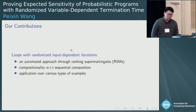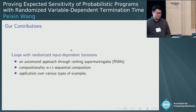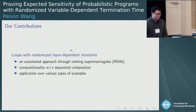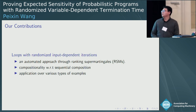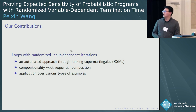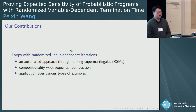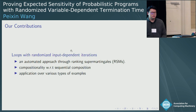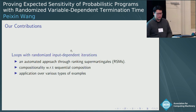In our work, we present an automated approach through working supermartingale-based reasoning. We prove a non-trivial result that it is compositional under sequential composition. We also show the effectiveness of our approach through various types of examples, such as stochastic hybrid systems, random walk, tabular drawing, and we also make a case study on stochastic gradient descent.